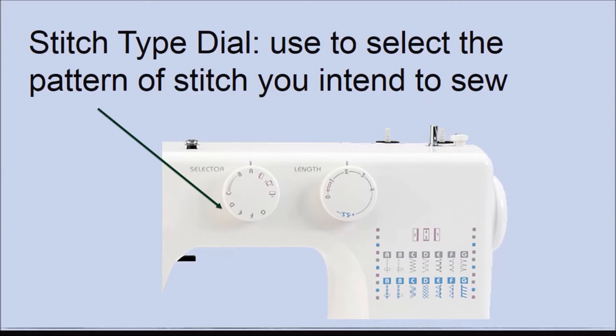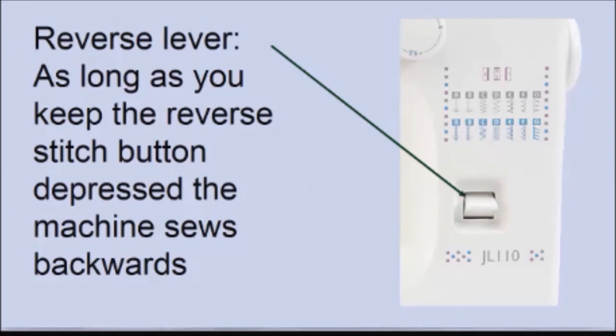This machine has straight stitches and zigzag stitches, labeled A, B, C, D, E, F, G. Your machine may have a different way the stitches have been labeled. Reverse lever — you press this lever or button if you want the machine to sew backwards. This lever is normally used when starting or finishing your stitches.